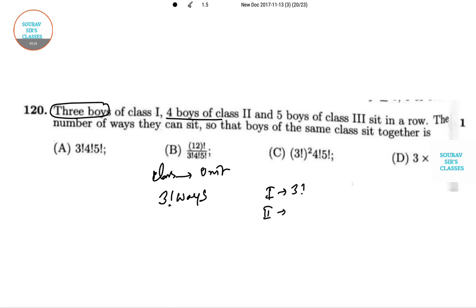And boys of class 2 can be done in 4! and this in 5!, and they are sitting together. So these all will be multiplied together. So 3! × 3! and the class units as a unit they can change the position in three ways by changing the different positions of 3!.